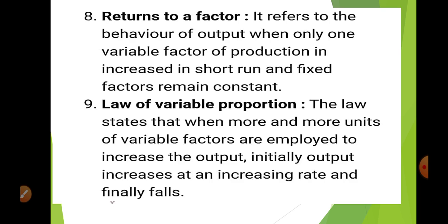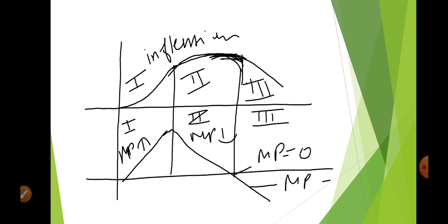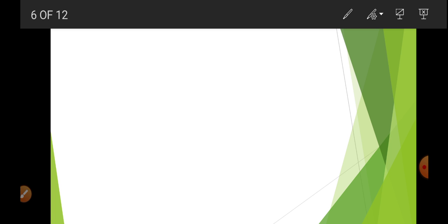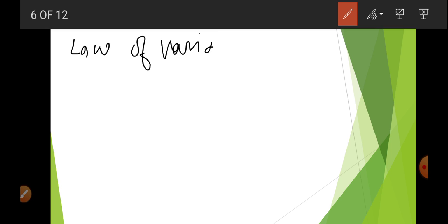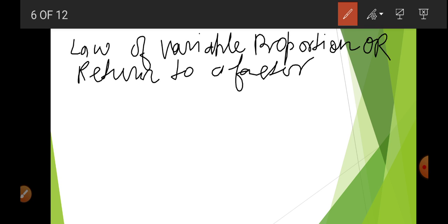Now, what do we mean by return to a factor or the law of variable proportions? It refers to the behavior of output when the variable factor of production increases in the short run and the fixed factor remains constant. The law states that when more and more units of variable factors are employed to increase output, initially output increases at an increasing rate and finally falls.